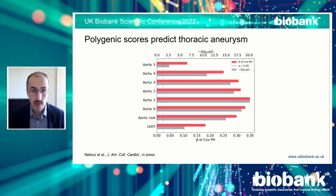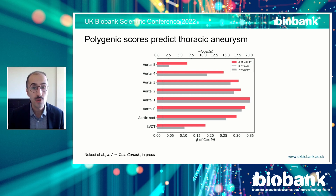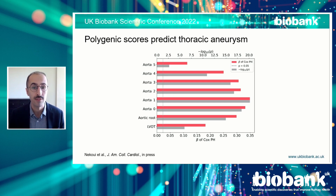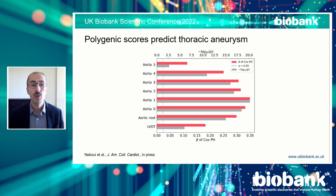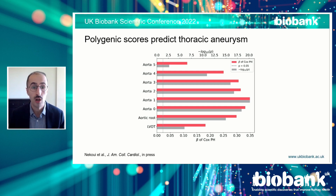For each diameter's GWAS, we used the hits to create a polygenic score for the remaining UK Biobank participants — excluding those who participated in cardiac imaging. We then assessed whether these scores, together with clinical covariates, could predict incidence of thoracic aneurysm using Cox models. All eight scores did predict aneurysm, but what we found fascinating was the relative performances. The strongest signal comes from the diameter we call Aorta 1, about one centimeter from the sinotubular junction, and signal is lost as one steps away anatomically in either direction.